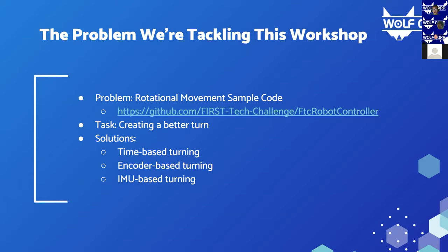Turning by time means you set your robot to a certain power and then turn for, say, five seconds, then stop. As you can imagine, turning by time can be pretty inconsistent because of various factors like battery voltage — high battery versus low battery — weight distribution on your robot, and the motors you have. All of that can affect your speed and therefore your distance traveled. So maybe you want to move 90 degrees but you'll be fluctuating a lot.